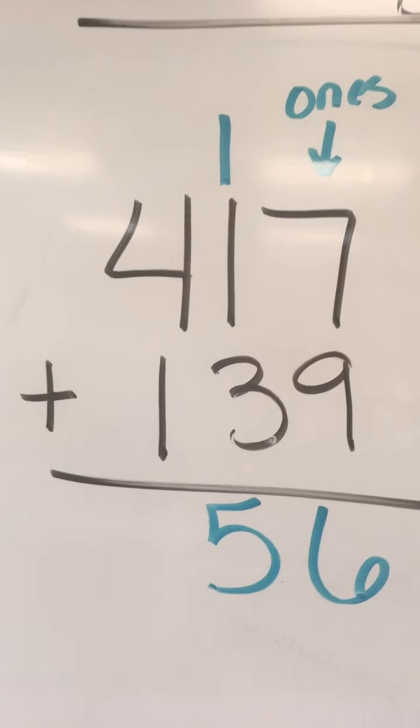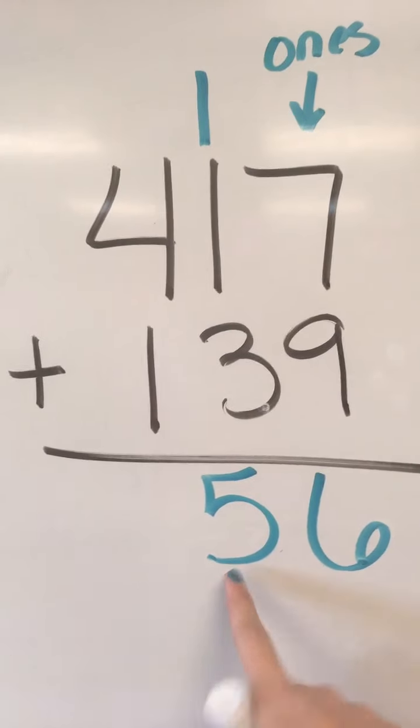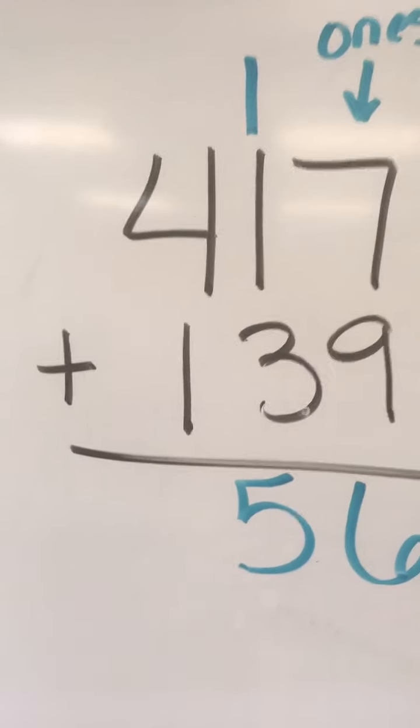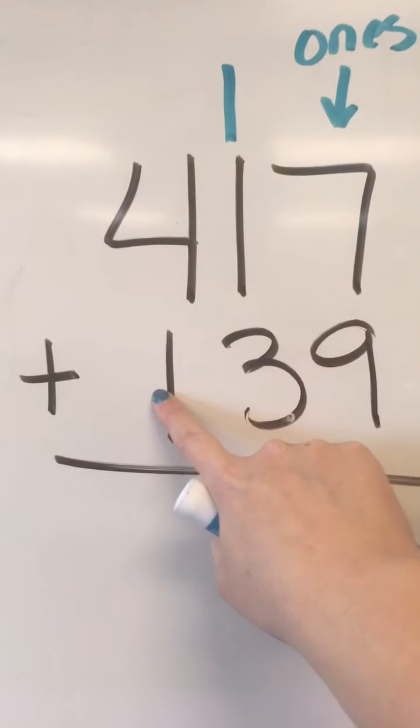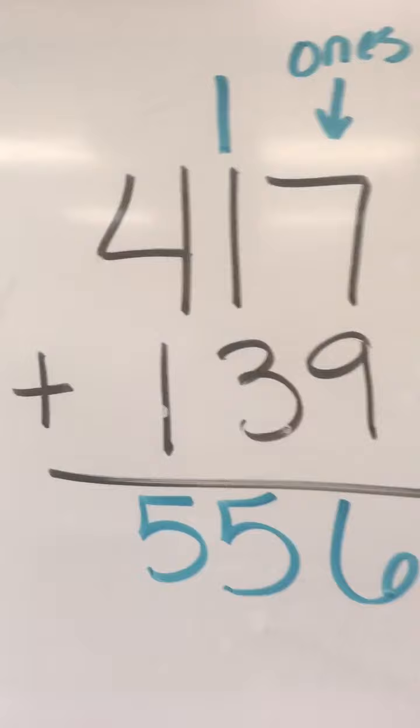Do we need to regroup again? The answer is no, because we don't have another ten that we need to regroup, so we can add our hundreds. We have four hundreds plus one hundred, and that gives us five hundreds.